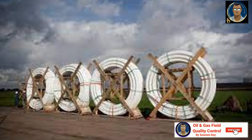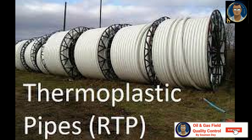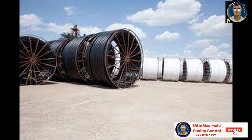Storage of RTP: spools of the product should be stored on level surfaces with no protruding objects that might contact and damage the pipe on its outermost layer. Spools placed on soft surfaces such as dirt or gravel require suitable support to prevent the spool flanges from sinking into the ground. The use of six-inch by six-inch timbers is recommended. Block or otherwise ensure spools cannot roll. Do not store the spools on slopes. If storage is to be an extended period of time, the pipe should be protected from freezing, as spools of RTP may contain some water from hydrotesting or condensation that can freeze and damage the pipe.